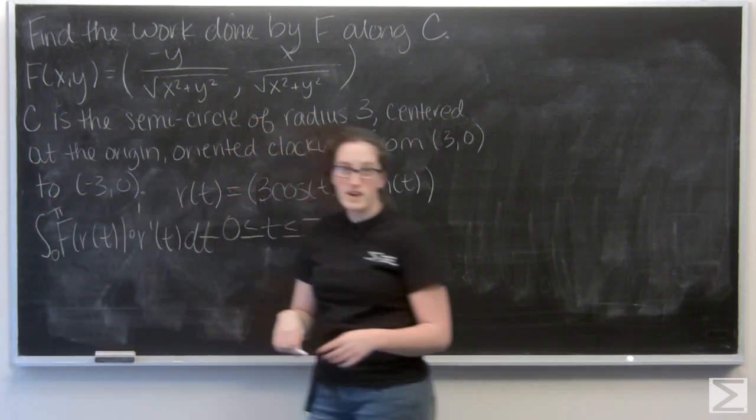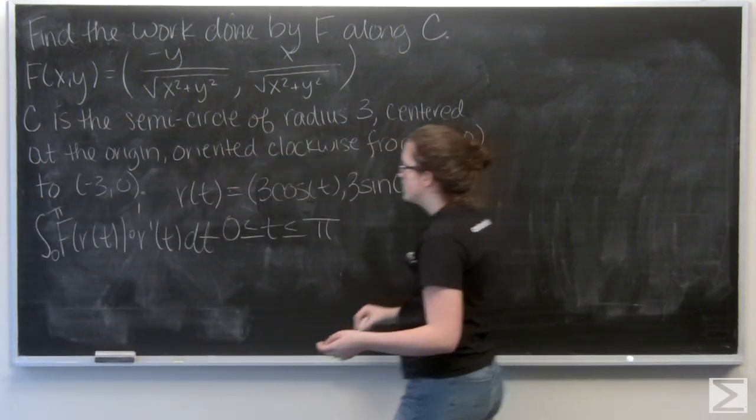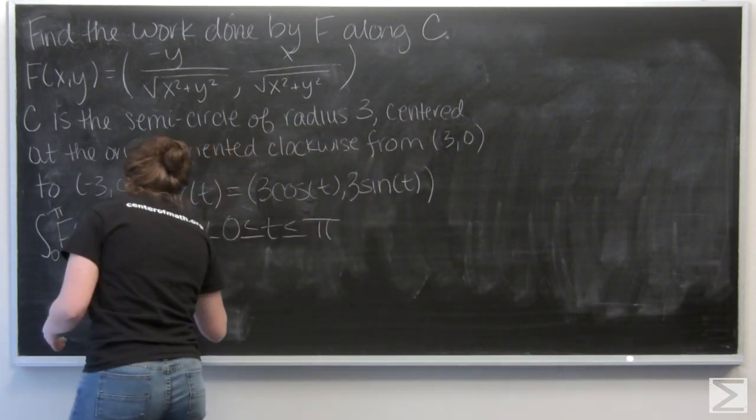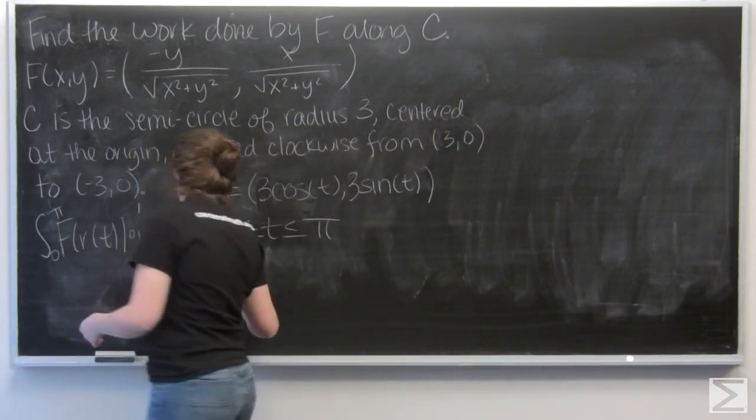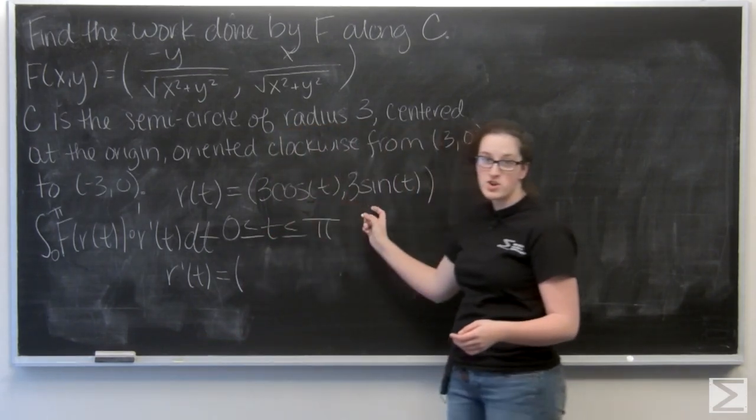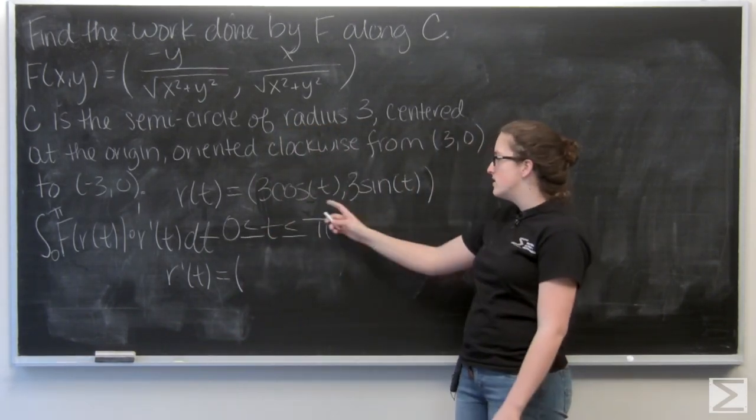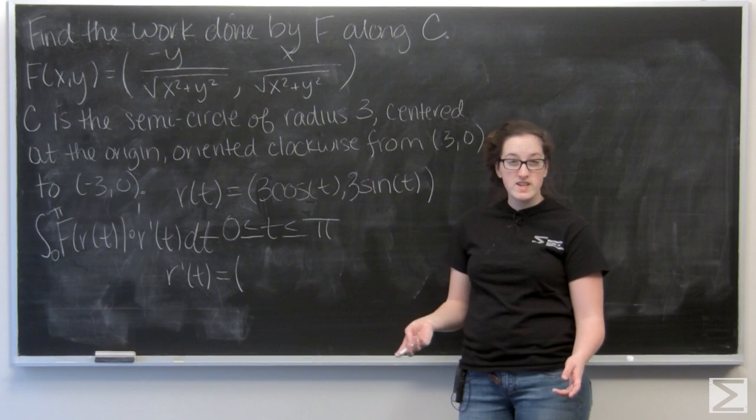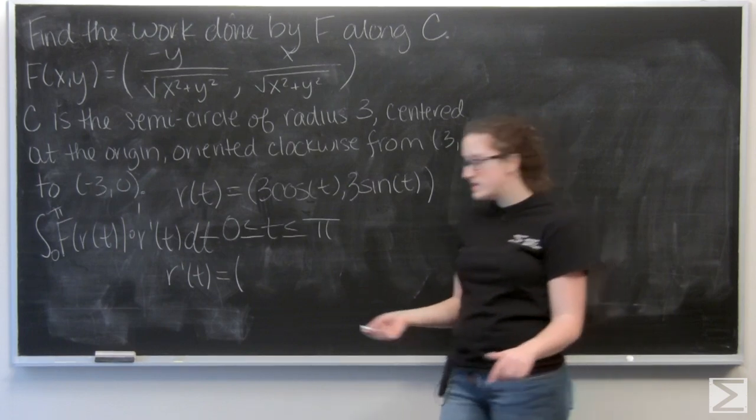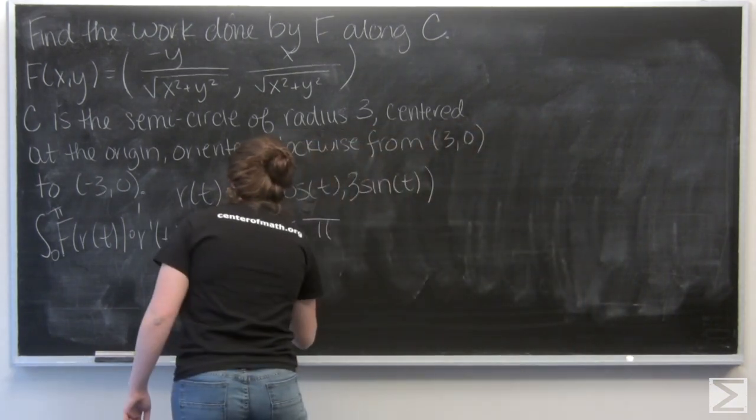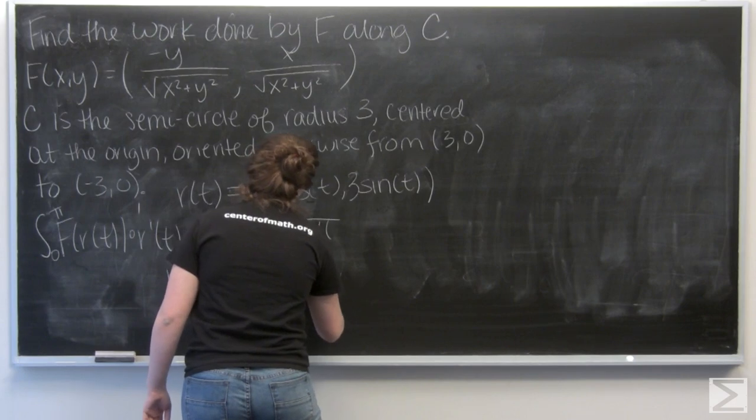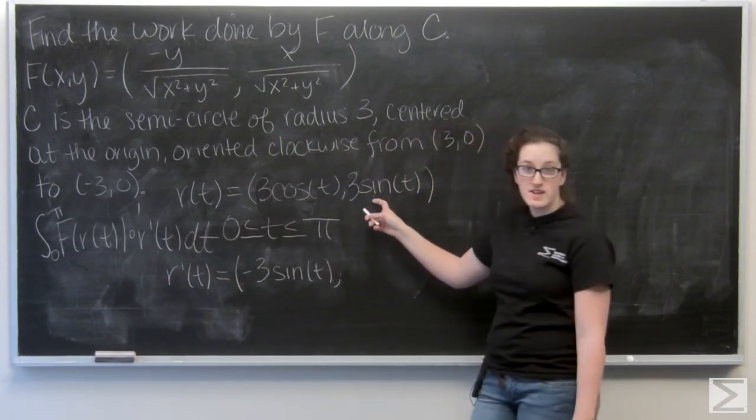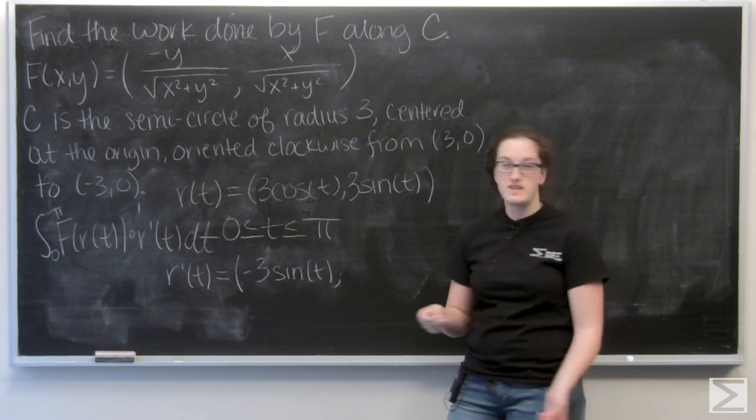Well, let's start by finding r'(t). So I just want to differentiate each term with respect to t. So the derivative of 3 cosine t is going to be -3 sine t, and the derivative of 3 sine t is going to be 3 cosine t.